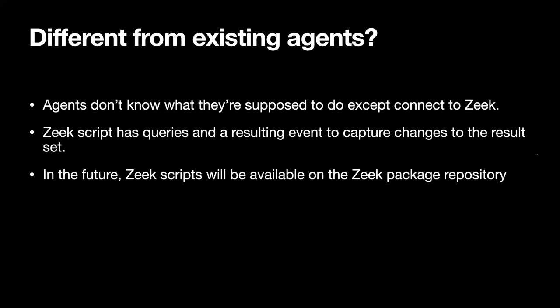So I wanted to talk about how Zeek agent is different from existing agents. The idea generally is that each agent, as it starts up, all it knows is to connect to your Zeek infrastructure. You don't need to tell it anything else — maybe just give it an IP address and port to connect to. You can configure certificates so that you're doing SSL encryption; by default it's encrypted with SSL without certificates, but you can make it more secure.